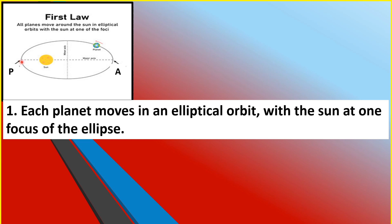The distance between the perihelion and the aphelion is what we call the major axis of the orbit of the planet. Half of that distance — in other words, if we divide the major axis by two — is what we call the semi-major axis of the planet's orbit, which we label as letter A.